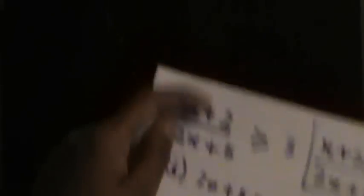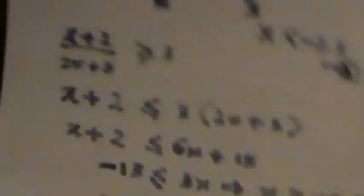So the range of values that satisfies the quotient function (x + 2)/(2x + 5) ≥ 3 is within the range −2.6 (inclusive) to −2.5 (exclusive). That's a simple problem introducing quotient functions using linear expressions in both numerator and denominator. In the next video, I'll be talking about quotient functions with quadratic expressions.